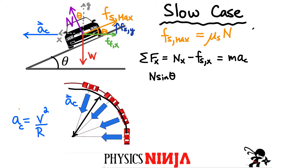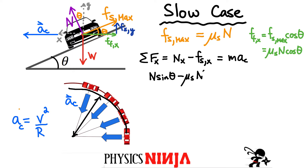The force of friction in the x direction is the maximum force of friction multiplied by cos of theta, and the maximum force of friction is the coefficient of static friction multiplied by N. Substituting that in, we get: N sin θ minus μ_s N cos θ equals m times v_min squared divided by r. This is minimum speed because friction is trying to hold the car in if the speed is not big enough to stay on that radius. This is Equation 1 — that one is super important.